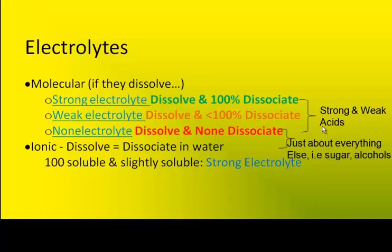The idea is that if an acid is strong, it will dissociate into ions 100%. I'll show you an animation of what I mean briefly.